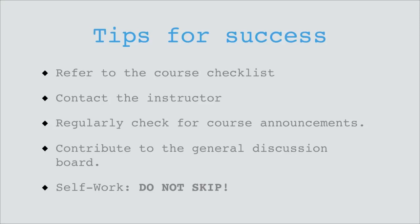Some tips for success. The first is to refer to the course checklist on a regular basis. The course checklist will have been mailed out to you before or on the day the course begins. It has due dates for when you are expected to complete the work from each module, and gives a literal checkbox for you to check off. I highly recommend you download the checklist, print it up, and keep it as an actual physical copy. It helps to be able to look over and say: what date is this due? What am I expected to do? All of the dates for things are on the course checklist.